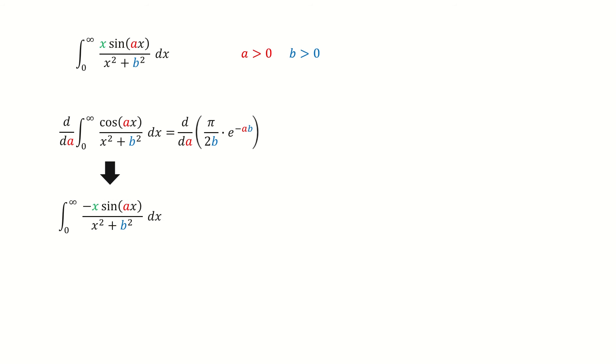After taking the derivative, the left hand side goes to here. And note for this x in the green color is coming from the chain rule. And for the right hand side, after we take the derivative we got here. So the b cancel out, and minus signs cancel out. So we got the result for this integral.